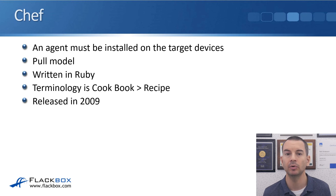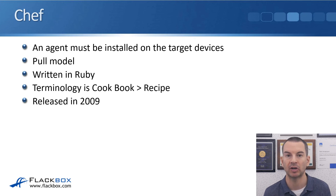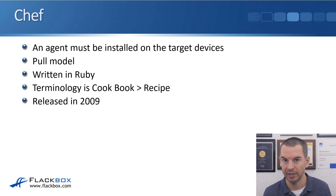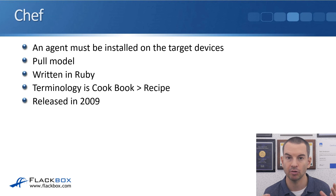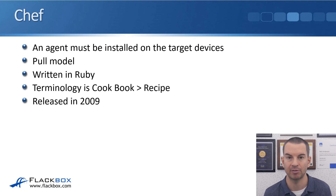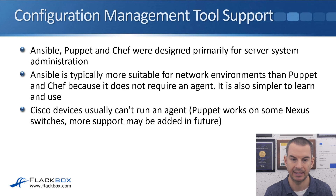The last one we'll look at is Chef. Like Puppet, an agent must be installed on the target devices, so you need to install a software plugin on all devices you're going to be managing. Chef, again like Puppet, is also a pull model written in Ruby. The terminology in Chef uses cookbooks and recipes. Chef is also mature, having been released in 2009.